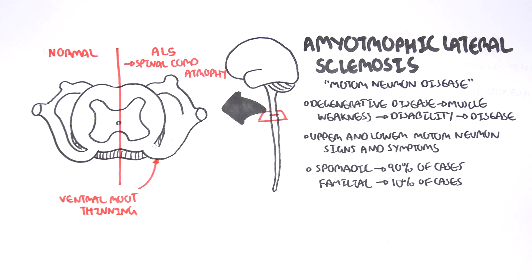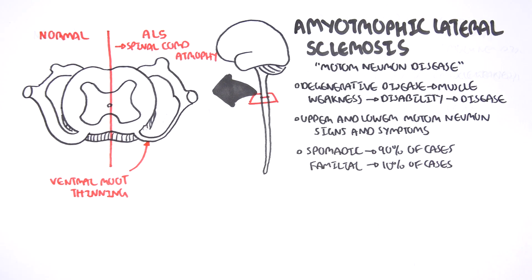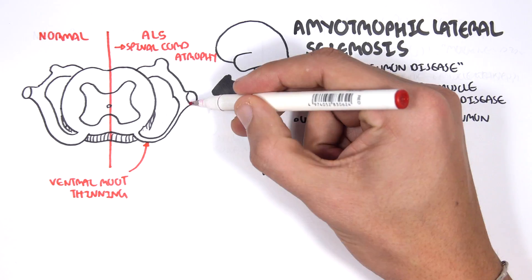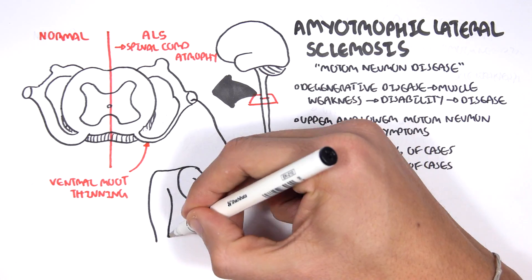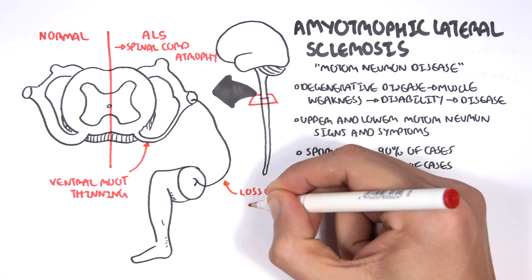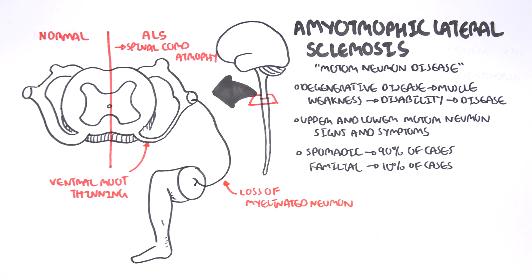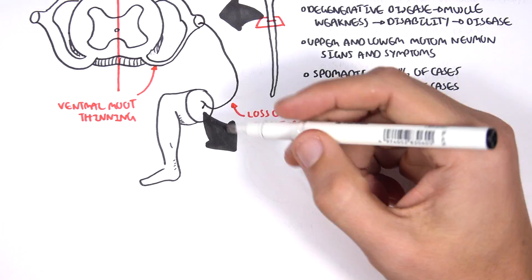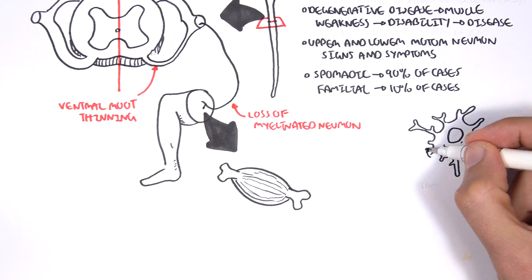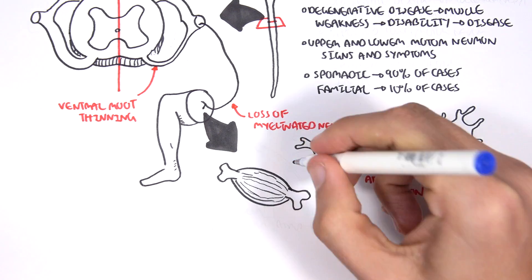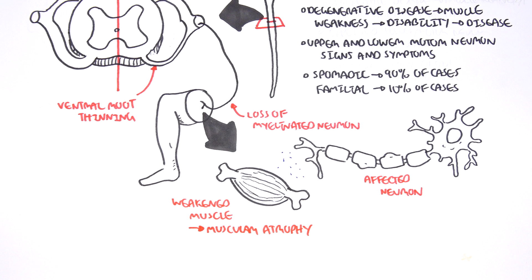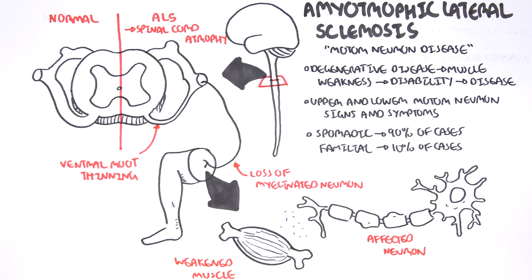We see ventral root thinning because the motor fibers leave through the ventral part of the spinal cord. Because of problems with the motor neurons, we see atrophy and ventral root thinning — loss of myelinated neurons coming from the ventral root. Subsequently, this leads to muscle weakness, disability, and death.